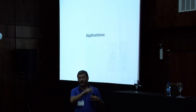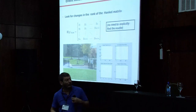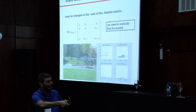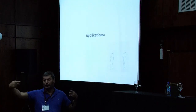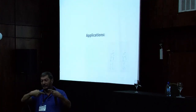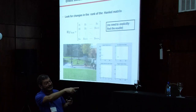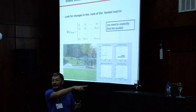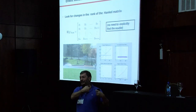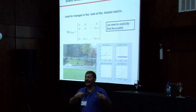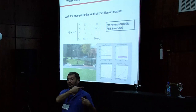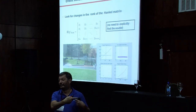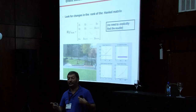Some applications: one is anomaly detection. We have two people who meet, exchange a box, and turn around. We monitor the Hankel rank on the right-hand side, and you can see the Hankel rank change exactly where the two people met and exchanged something. So you can analyze lots and lots of data and find interesting things when the invariant changes — the invariant here being the order of the model.